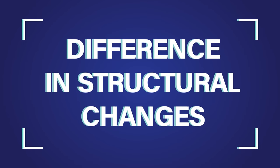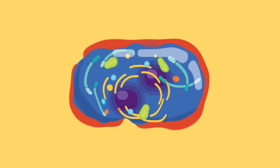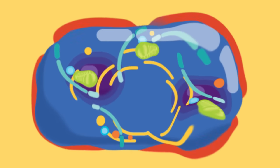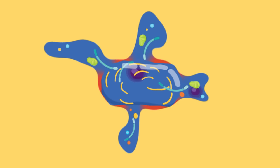Difference in structural changes. In necrosis, there is a loss of integrity of the wall of the cell which leads to swelling of the cell's contents as well as disintegration of small bodies of the cell.